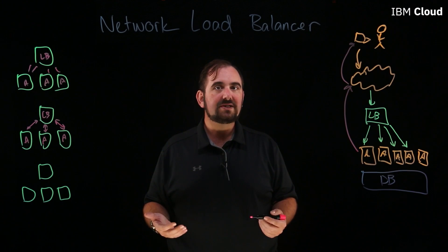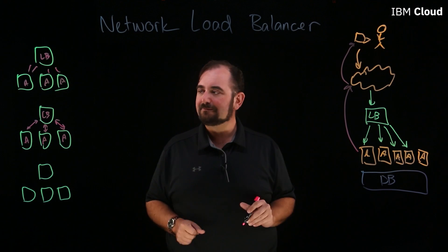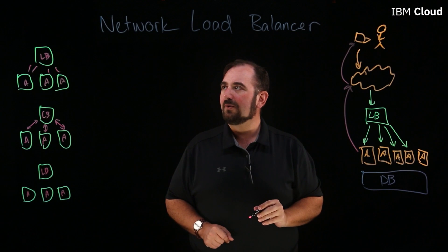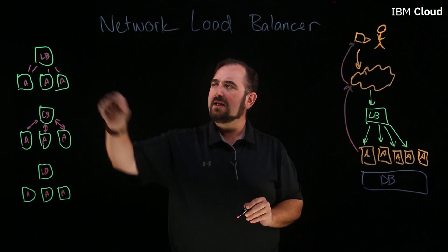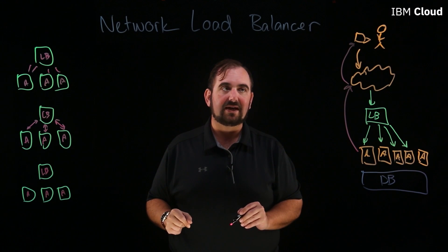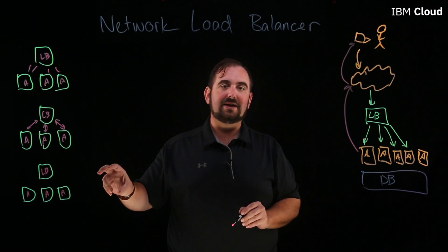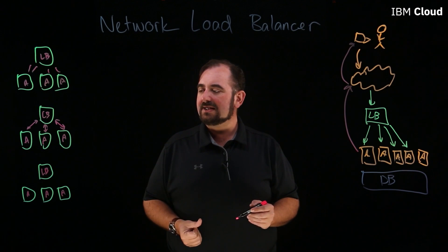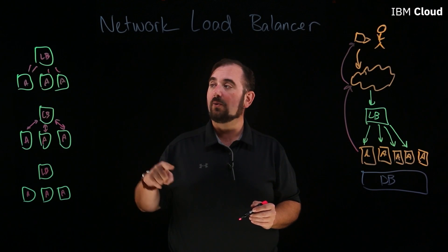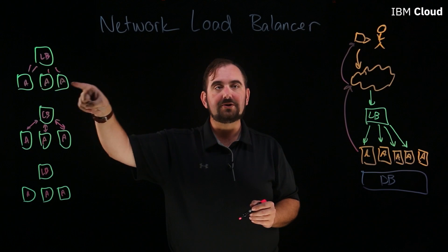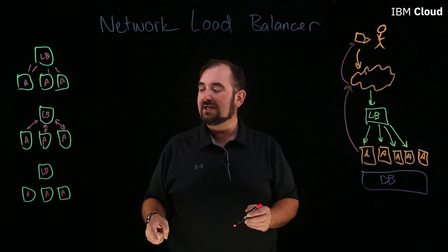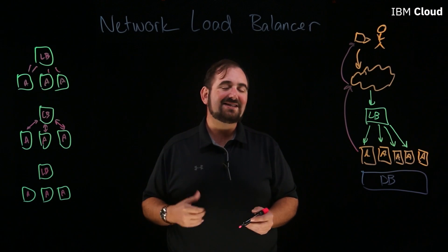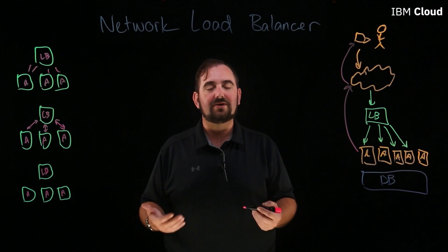Scenario three covers situations where you want more control than simple round robin, but don't want the full setup and configuration of smart load balancing. There are actually around nine different algorithms to choose from that split the difference. One example is random select: instead of sequentially going through app server one, two, three repeatedly, the load balancer runs a randomizing function — maybe the first two connections go to server one, the third goes to server two, connections four through six go to server three, and so on. These are simply different algorithms for deciding where to send traffic.